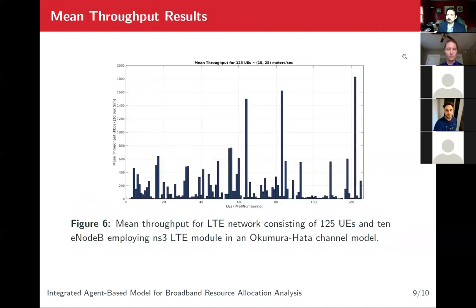Kuldeep will talk about the mean throughput results. Once we collected the measurements, we plotted the mean throughput. There are 125 UEs, each moving with different velocities, so they will have different impacts. Since we are using the Okumura-Hata channel model, each will be using a different SNR. All 125 UEs have different throughput rates. We ran the simulation for 50 seconds, and to get the mean throughput rate for that entire duration, we computed this plot. This shows the mean throughput rate for 125 UEs with different velocities over that whole interval.